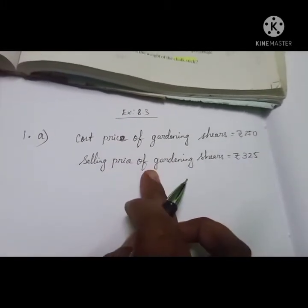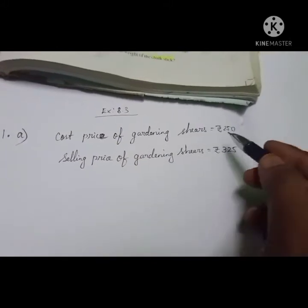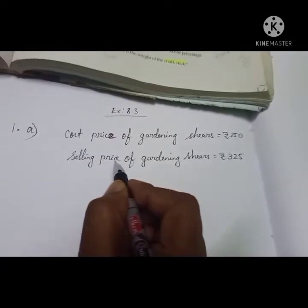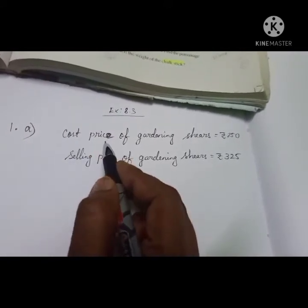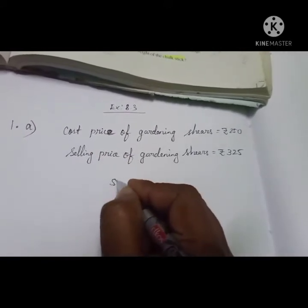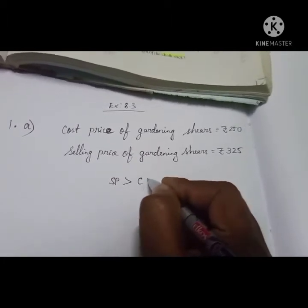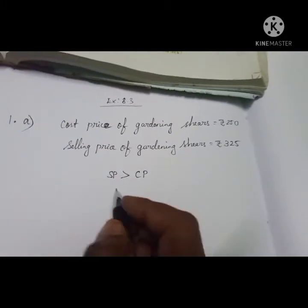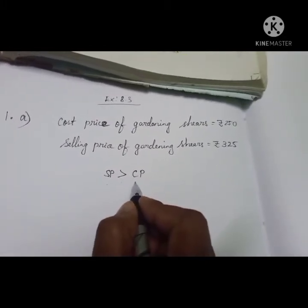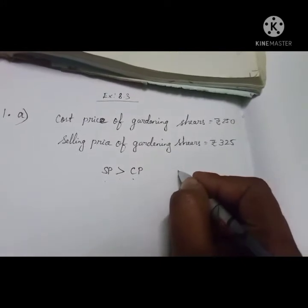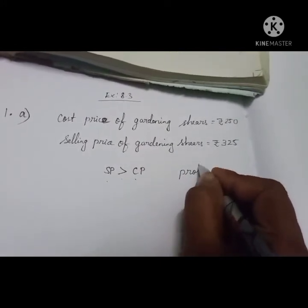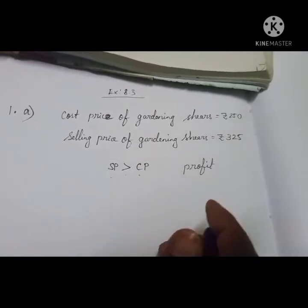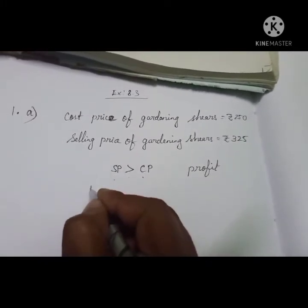We know the cost price and selling price. We have to compare which is greater. Of course, selling price is greater than cost price — SP is greater than CP.